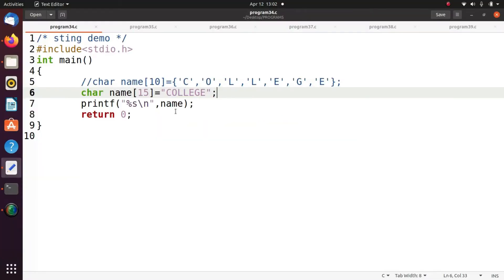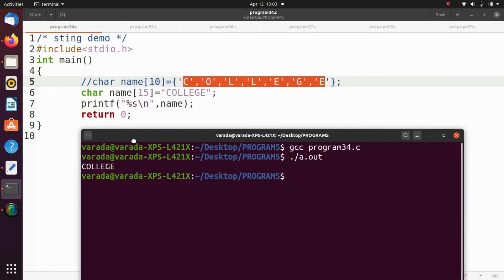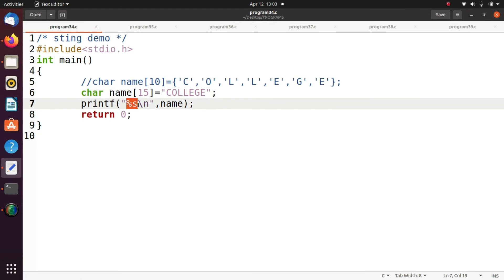So now we are going to see how the strings are stored in character array. If you are giving anything in double quotation, that is a string. Or instead of this, you are going to use the character array also. To execute this program, gcc program 34.c, dot slash a.out. So how we can display the string, by using %s control string, you are going to print the string name.